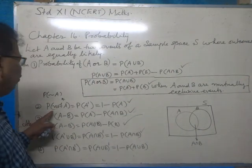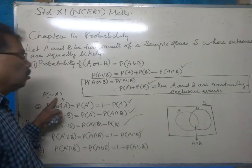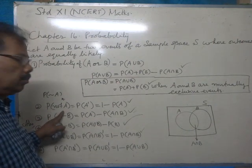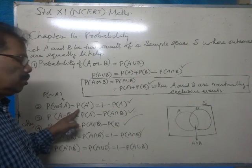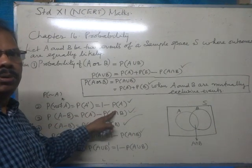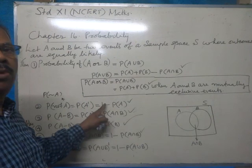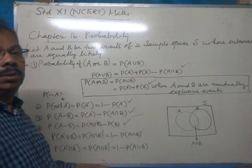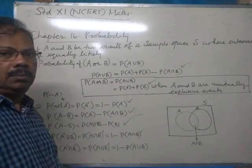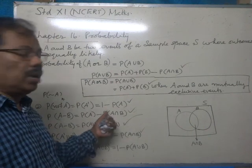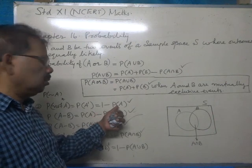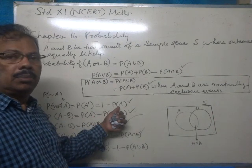Now, probability of A dash — that is, the complement of A — equals 1 minus probability of A. Simply subtract the probability of A from 1. Because the total probability, probability of S, is 1. Therefore, probability of A dash is equal to 1 minus probability of A.